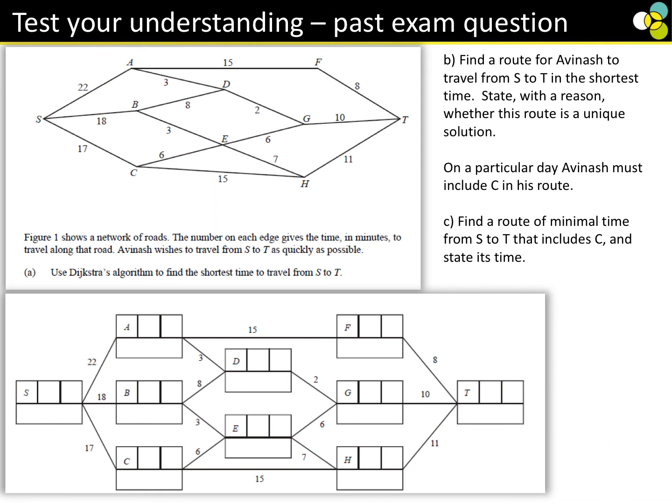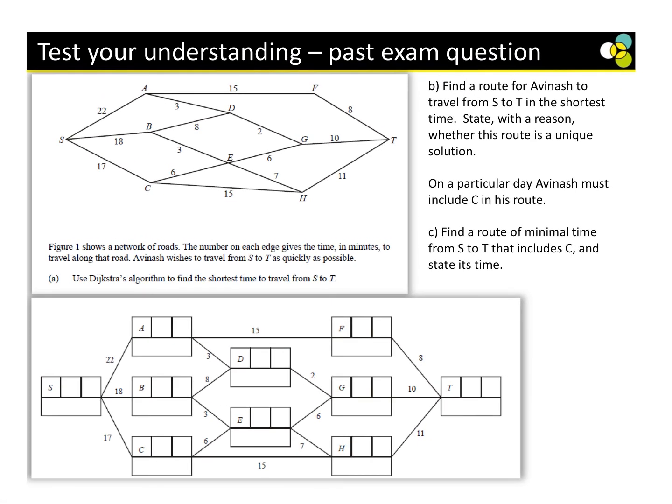Use Dijkstra's algorithm to find the smallest time from S to T, find a route, and state the minimal time. It's probably about 8 marks — off you go.